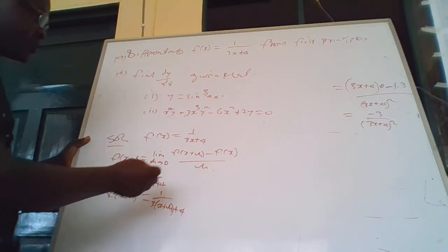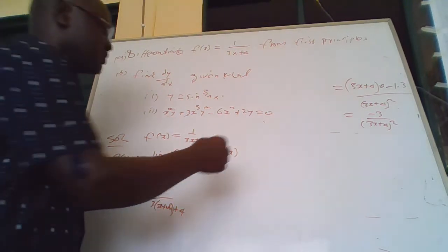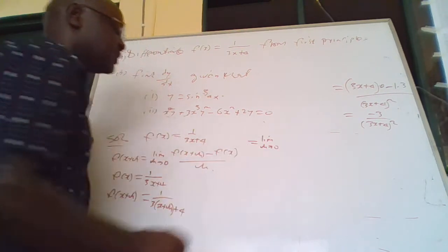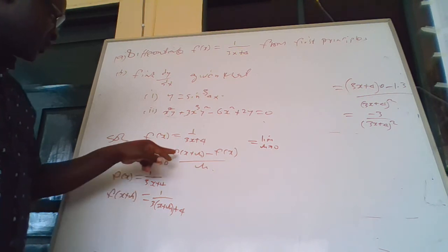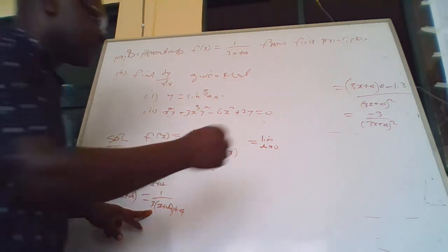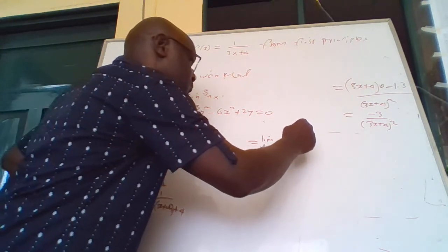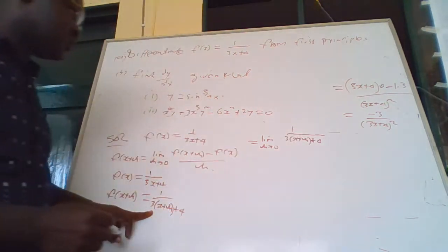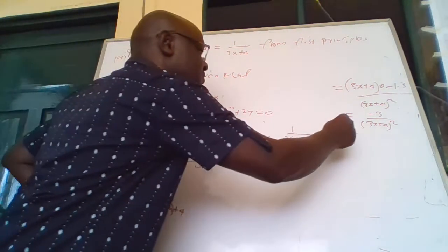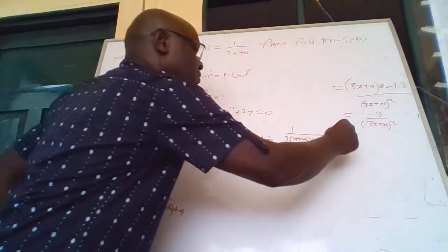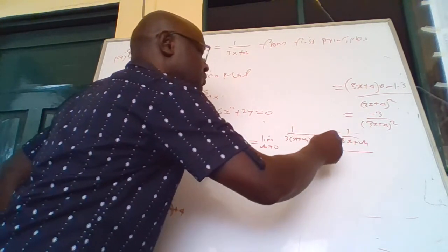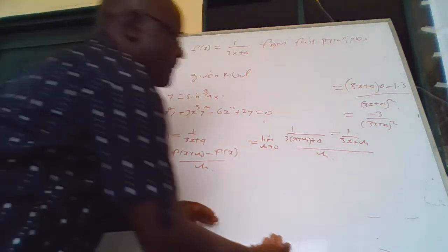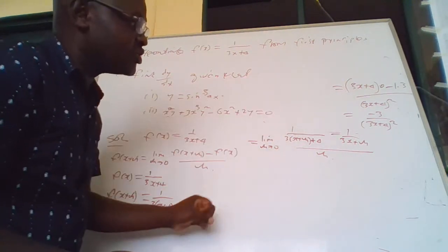Therefore we now substitute. The limit when h is approaching 0 of: f of x plus h, which is 1 over 3 times x plus h plus 4, minus f of x, which is 1 over 3x plus 4, all divided by h.